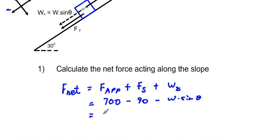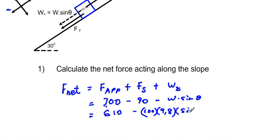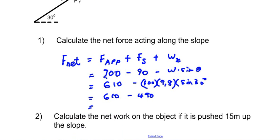So F_net = 700 minus 90, which is 610 newtons, minus w·sinθ. W equals mg = 100 × 9.8 = 980 N, times sin(30°). So this becomes 610 minus 490, which gives us 120 newtons. The net force acting along the slope is 120 newtons.